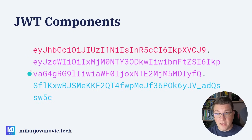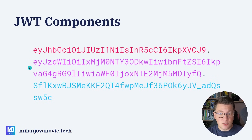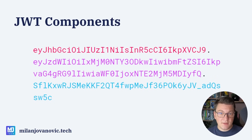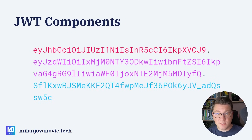Then you have your payload in purple, which is usually the part that you are most interested in. It contains the issuer, the audience, the subject — which is the identifier of the user that obtained this token. And then you have the signature in blue, which allows you to verify that the JSON web token provided to your API is the one that was created by your system. This is how you can enforce authentication with JSON web tokens.